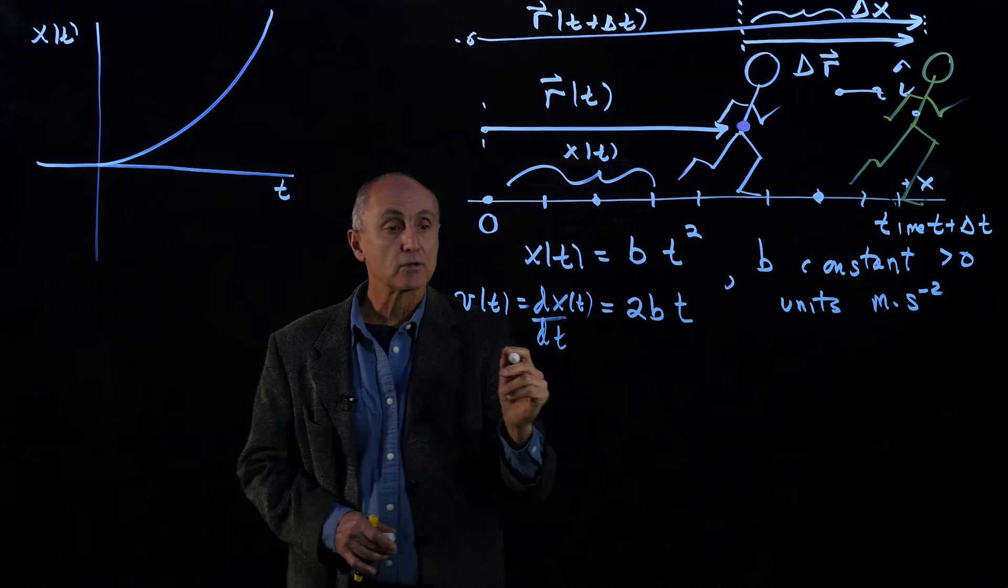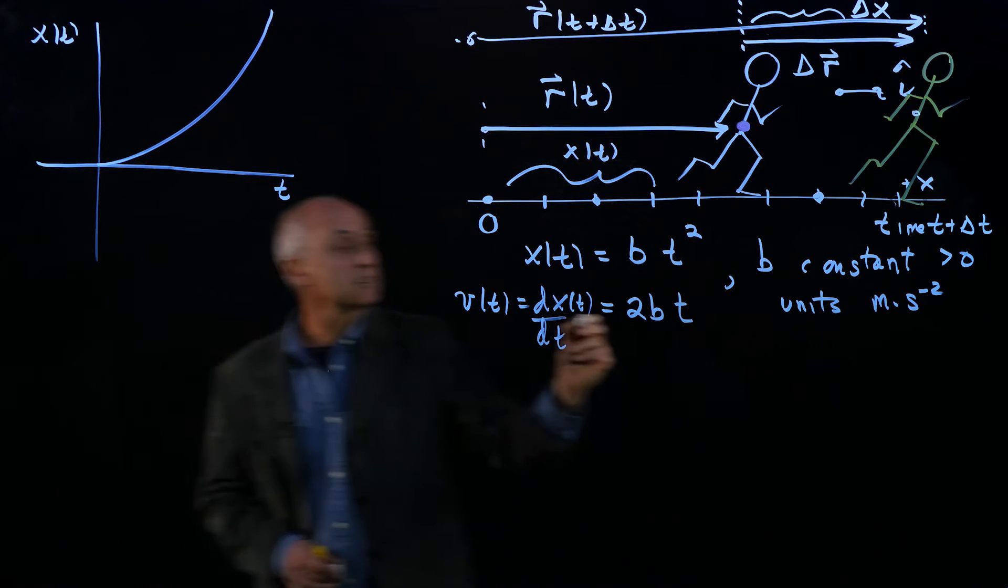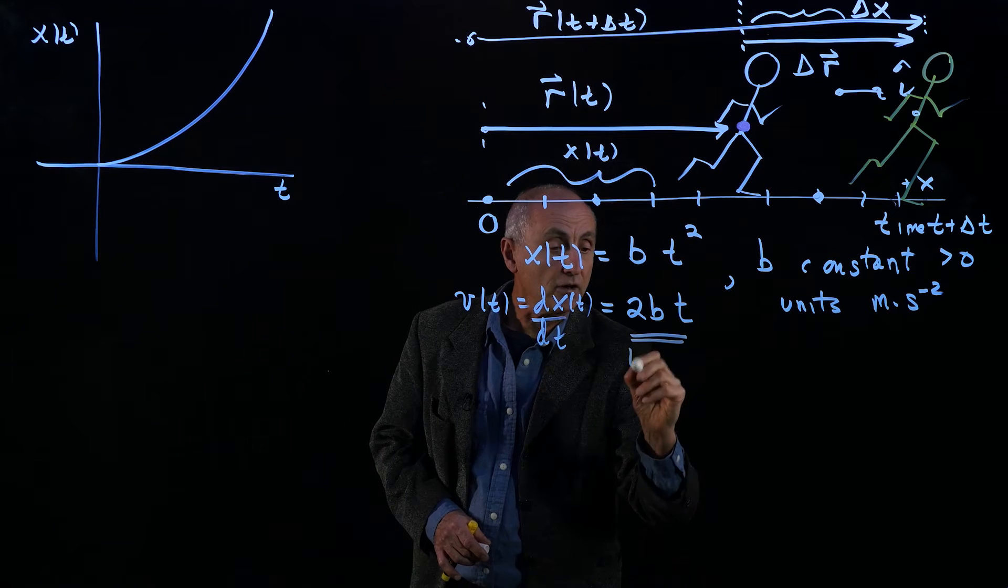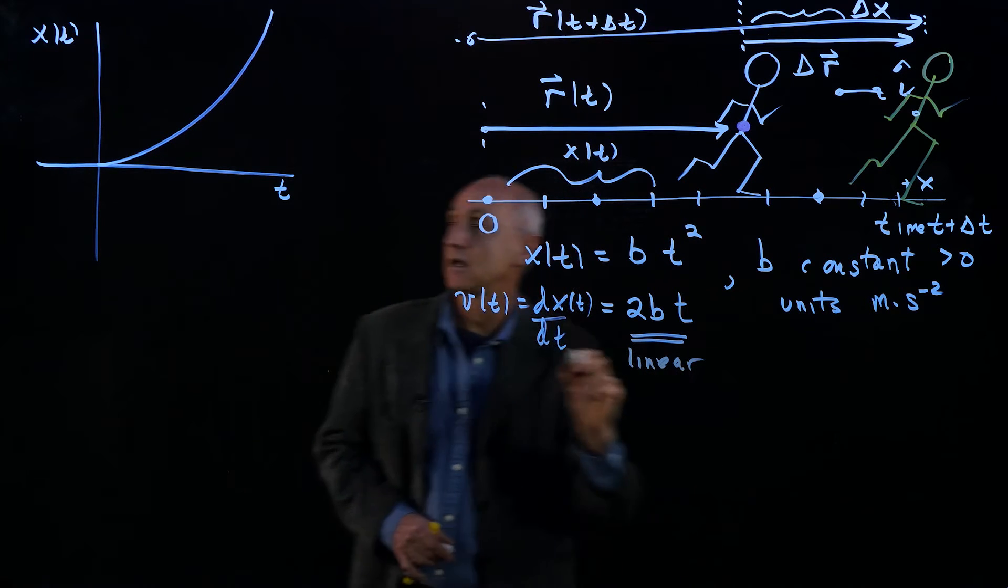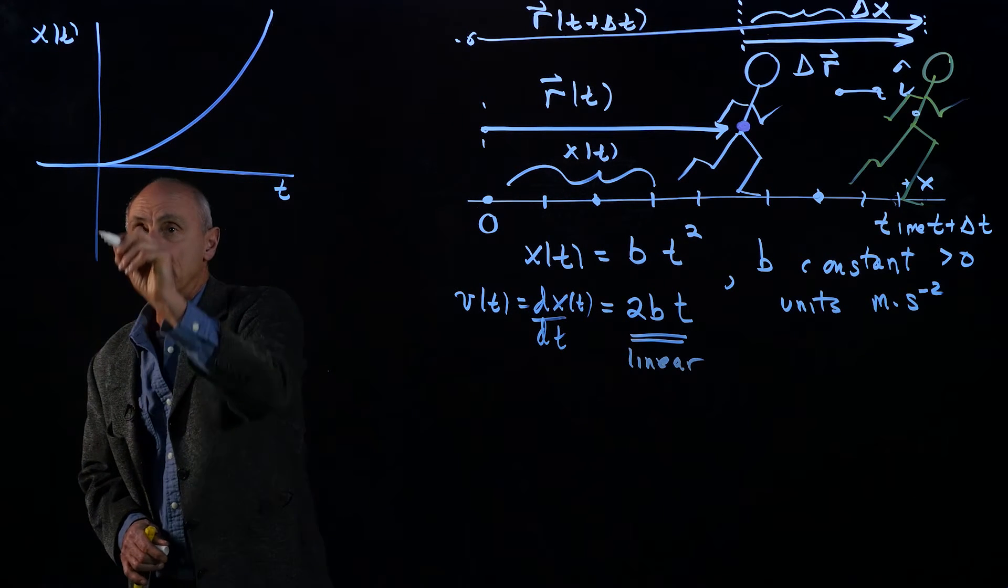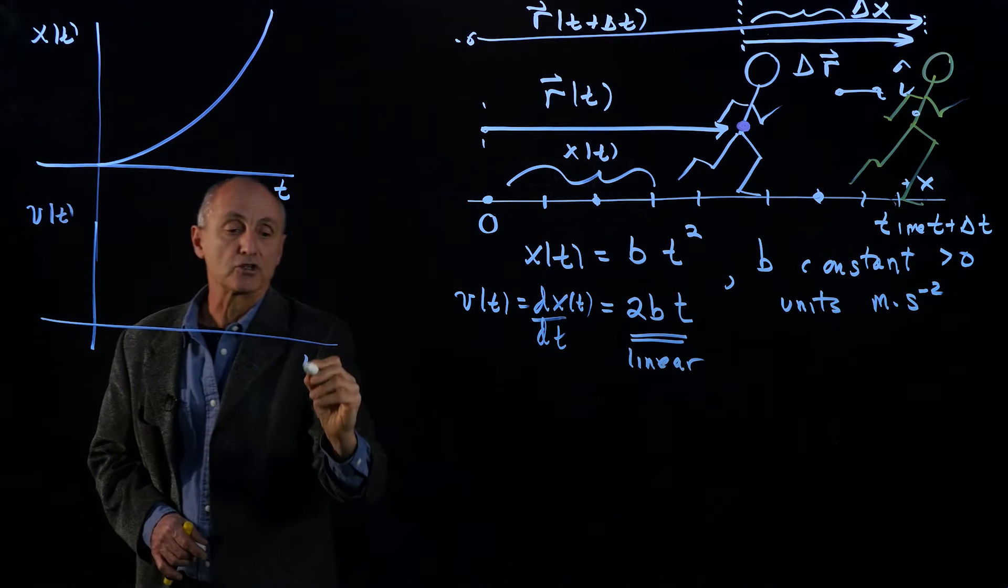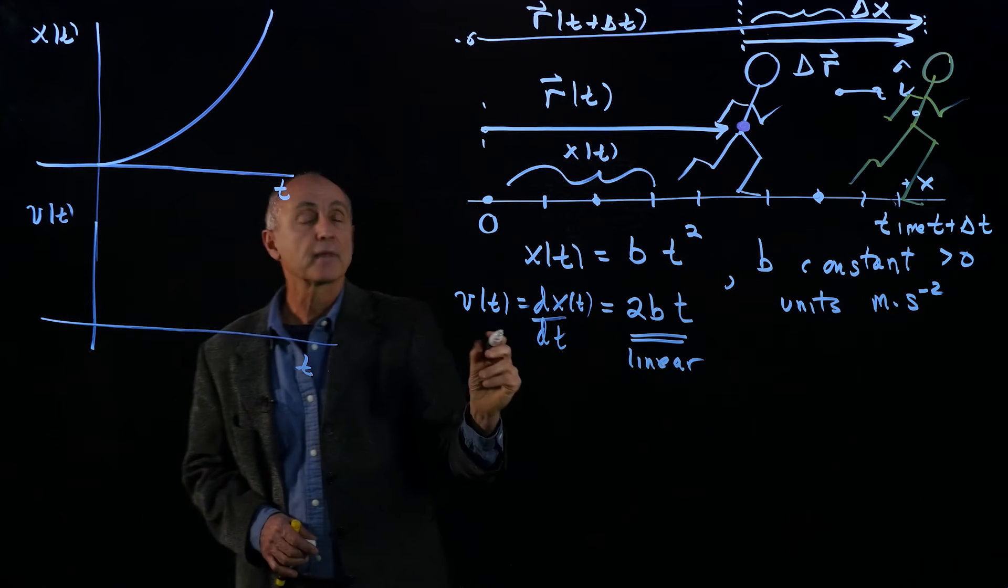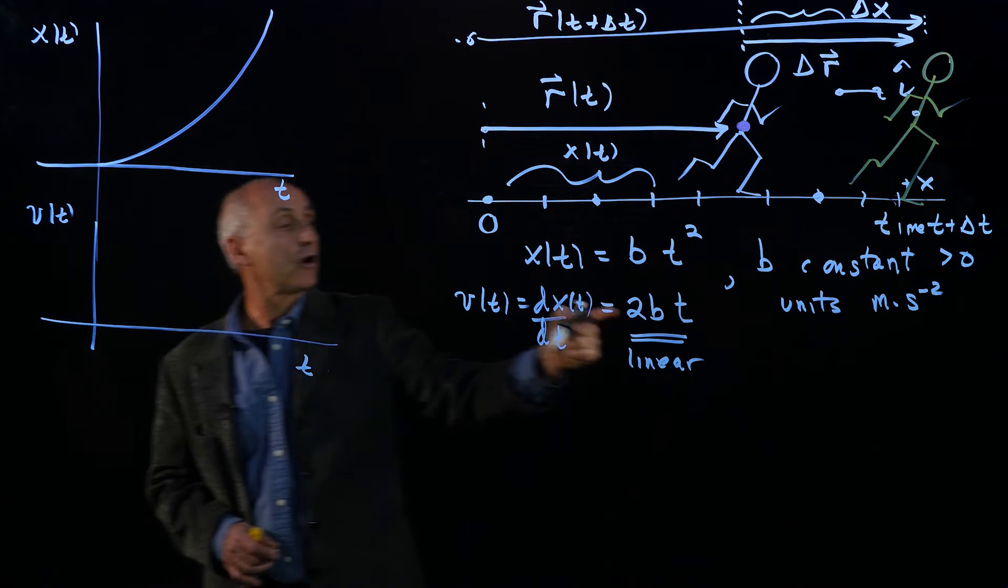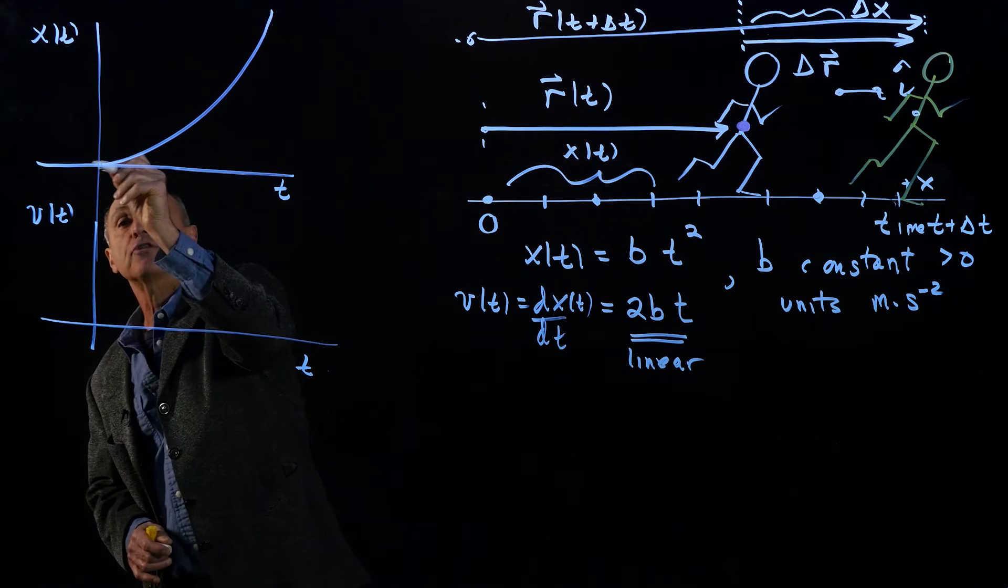Now, let's plot that function. Notice this is a linear function. And so if I plotted underneath here the velocity as a function of time, it starts off with a zero slope.